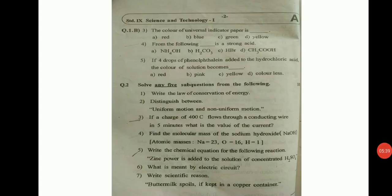From the following, dash is a strong acid. About strong acids and strong bases, weak acids and weak bases, all the examples I have given here as well as in the textbook also. If you go through the textbook properly, you will understand. Next is, if 4 drops of phenolphthalein is added to hydrochloric acid, the color of solution becomes dash.